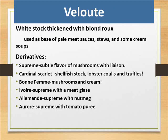Velouté is white stock thickened with blonde roux, used as a base for pale meat sauces, stews and some cream soups. Derivatives include: Suprême — subtle flavor of mushrooms with liaison; Cardinal — scarlet shellfish stock, lobster coral and truffles; Bonne Femme — mushrooms and cream; Ivoire — suprême with a meat glaze; Almond suprême with nutmeg; and Aurore — suprême with tomato purée.